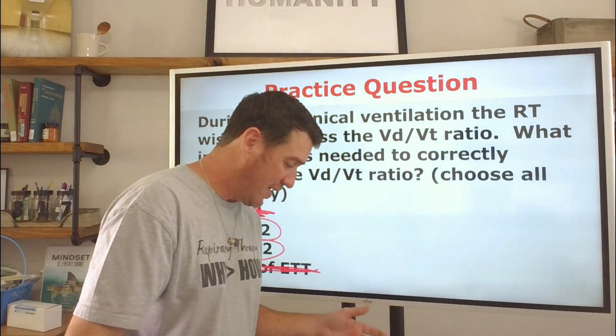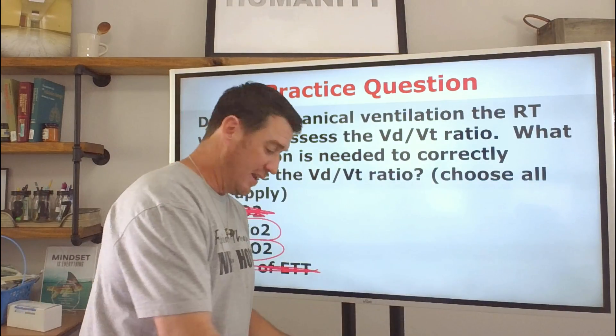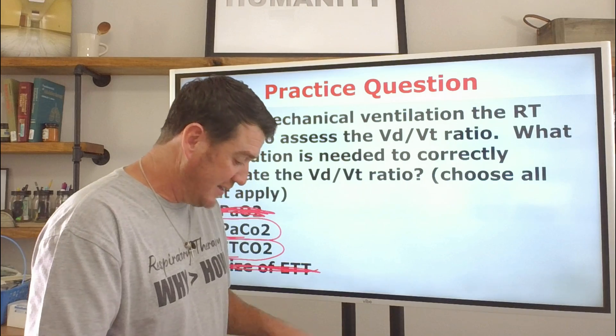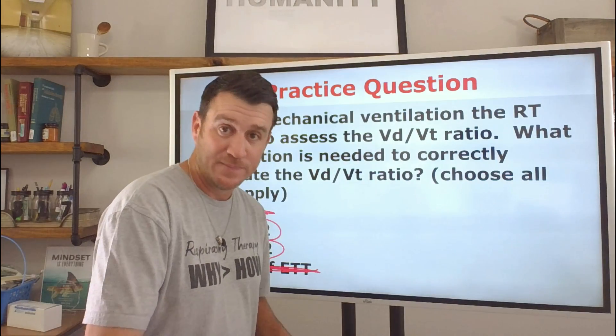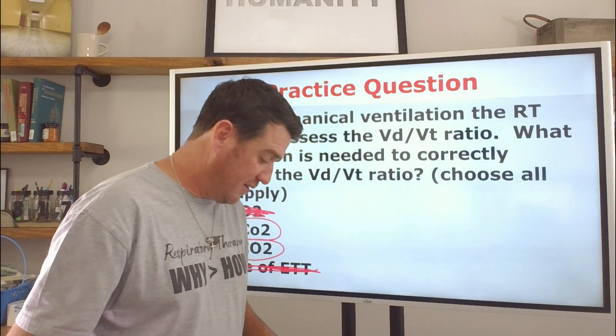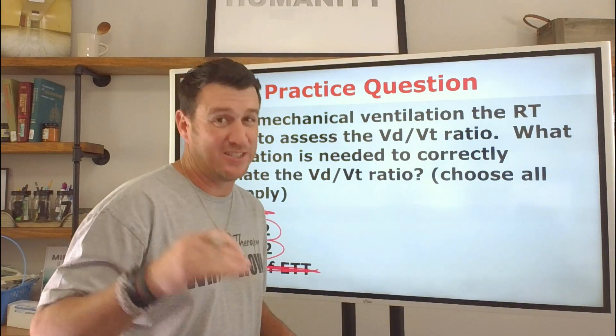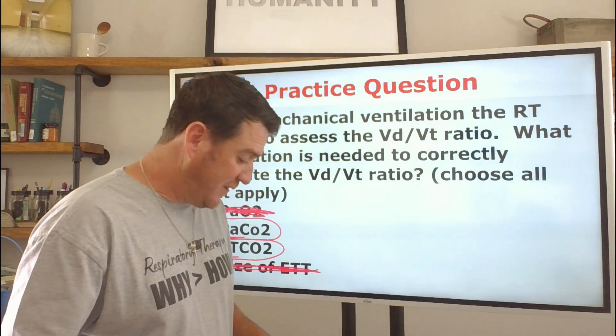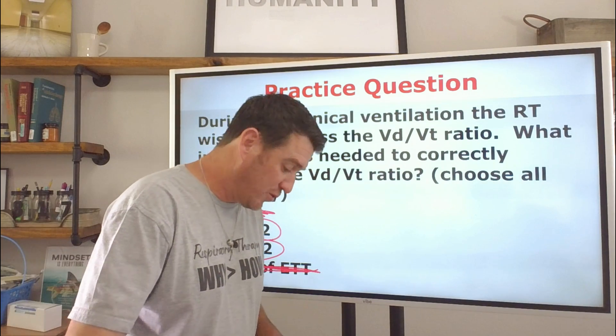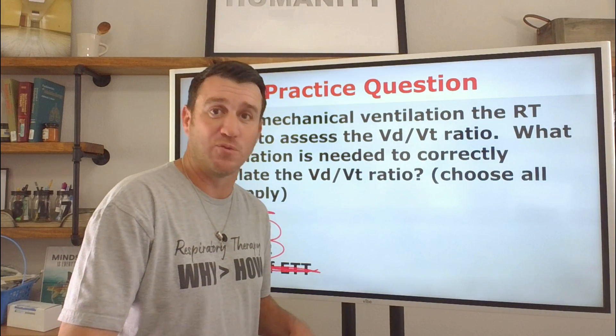During mechanical ventilation, the RT wishes to assess the VD to VT ratio. What information is needed to correctly calculate the VD to VT ratio? Choose all that apply. Well, remember, we didn't do anything with PaO2. PaCO, PetCO, PaCO. PaO2, not an option. PaCO2, 100%. Your partial pressure of end tidal CO2, 100%. Your size of the endotracheal tube? It don't matter. But it's not needed to calculate your dead space amount. So you realize that your arterial CO2 and the partial pressure of end tidal CO2 are going to be the two values that you need to calculate your VD to VT ratio, which is going to tell you the amount of dead space.